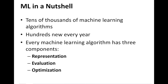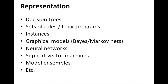In a nutshell, there are tens of thousands of machine learning algorithms, and several new ones are proposed every year, but they all have something in common: representation, evaluation, and optimization. Representation refers to how you represent the data and what hypothesis space your function belongs to — examples include decision trees, sets of rules, graphical models, neural networks, support vector machines, and ensemble learning. We will look at all these models over the course of this semester.